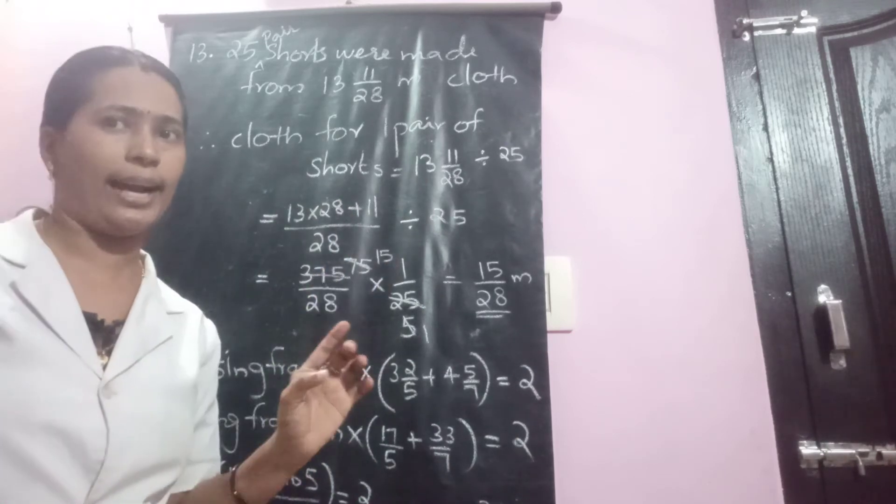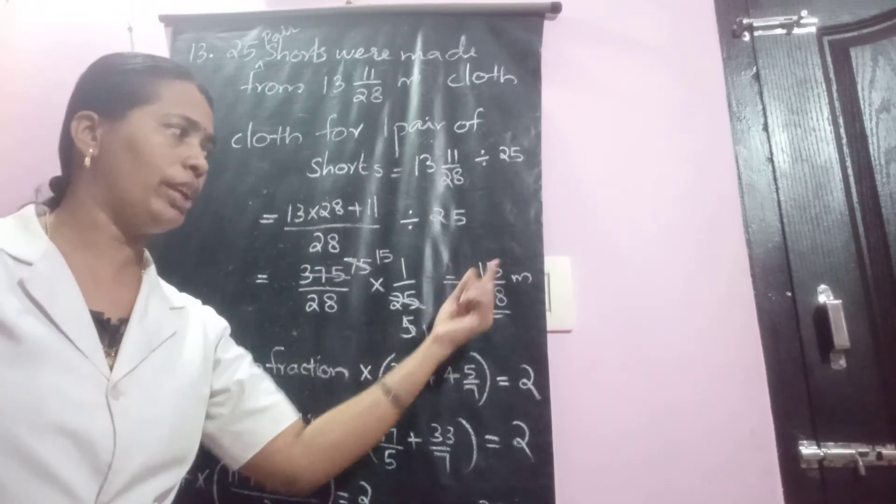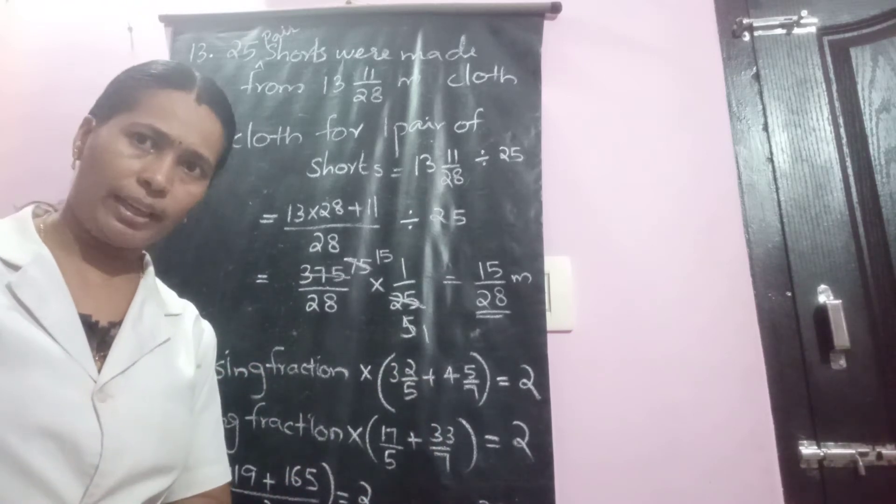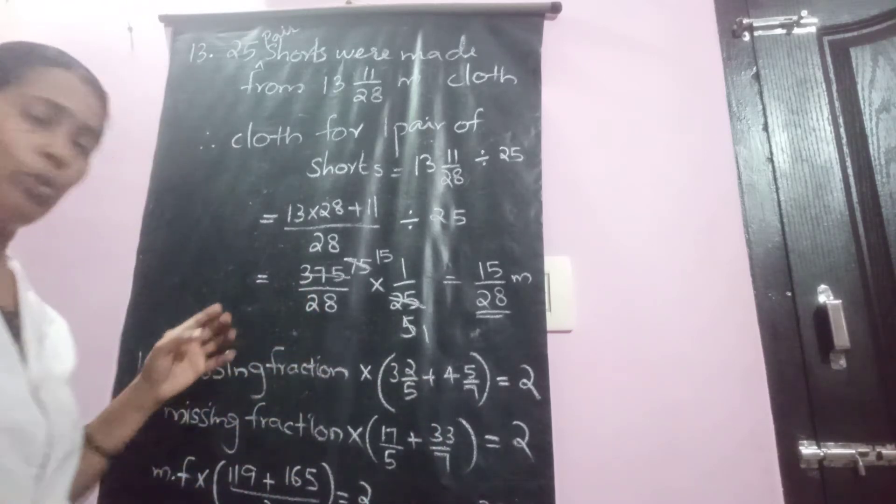Because length of clothes they are. So the answer is 15 by 28 meter. That's it. Is it clear? Any other doubt? Let us move to the other question.